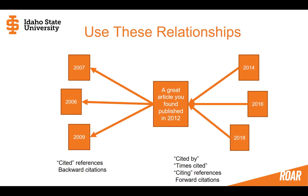Just a little vocabulary before we do that. When we say cited references, that means we're going backwards in time. But if you see 'cited by,' 'times cited,' or 'citing references,' get excited — because those terms mean you're going forward in time. Cited by, times cited, or citing — those are all the forward-in-time words.